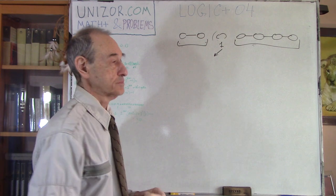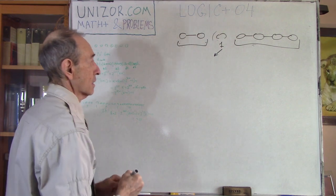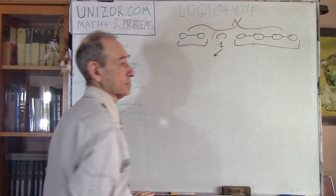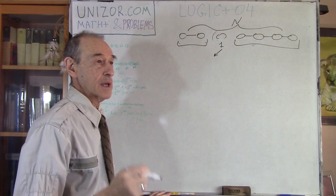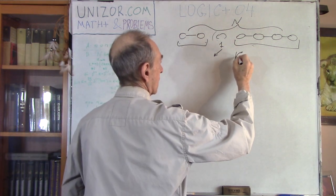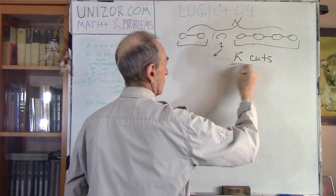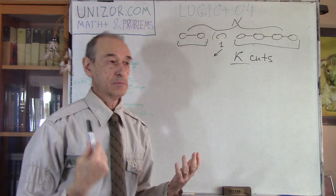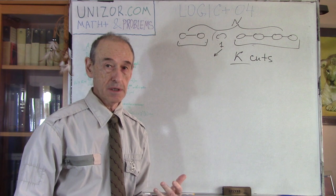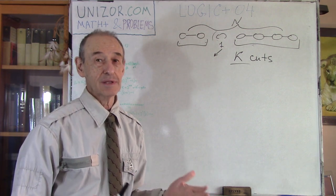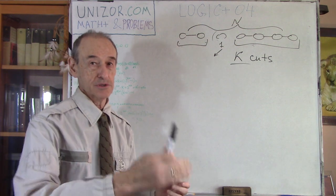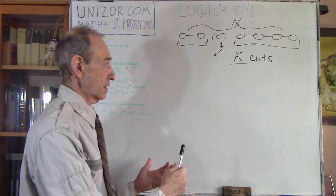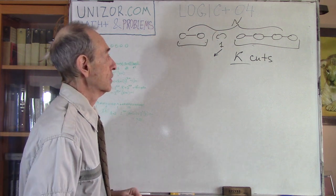Now here is the second problem. Let's assume you have the same chain with N links, and you are making only K cuts. The task is: how can we cut it in such a way to maximize the number of days you can pay individually one link at a time? This is a much more general problem. Pause the video and think about it.